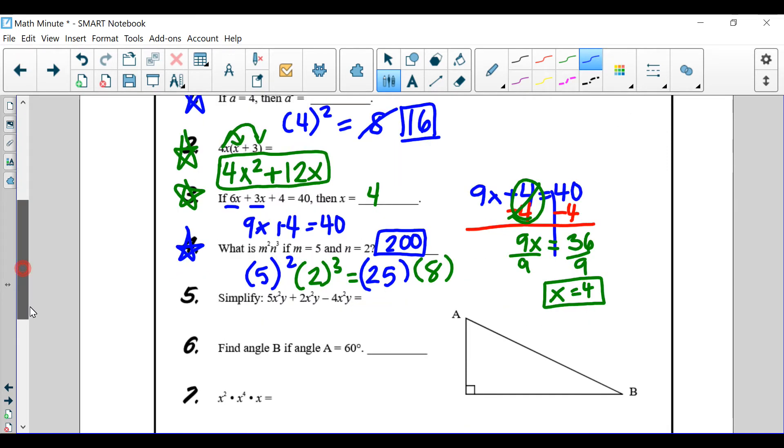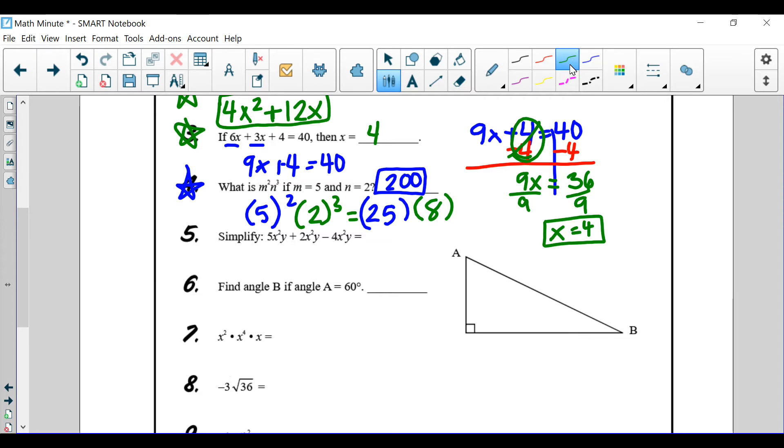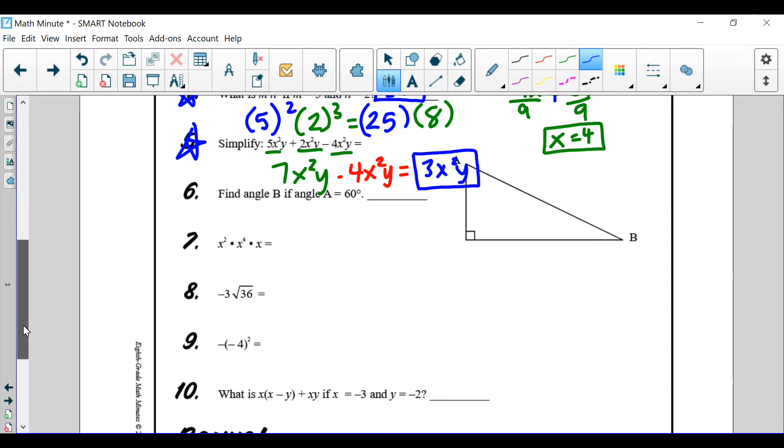Alright, let's go ahead and go over number 5. Number 5, we're going to combine what we have here. We've got 5x squared y, 2x squared y, minus 4x squared y. If you notice, they all have the same variables, so that means we can combine everything. So, 5x squared and y, plus 2x squared and y, is going to be 7x squared y. Then we're going to go ahead and subtract 4x squared y. And so, we end up with 3x squared y. Alright, how are we doing so far? Are we doing well? Great.